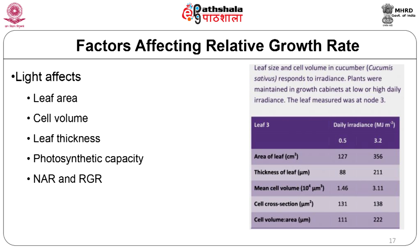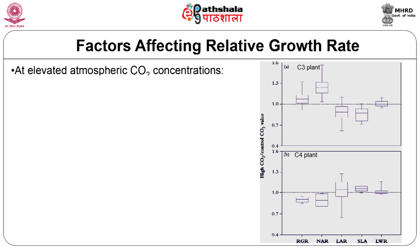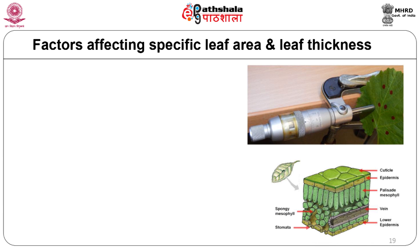At lower light intensities, leaves are thinner and SLA increases due to greater leaf area per unit dry mass. At elevated atmospheric CO2 concentrations, C3 plants show lower LAR but a greater NAR, resulting in higher RGR. In C4 plants, NAR is reduced under elevated CO2, which leads to a reduction in RGR. Young seedlings in their exponential growth phase are typically most responsive to elevated CO2 and show high RGR under greenhouse conditions.